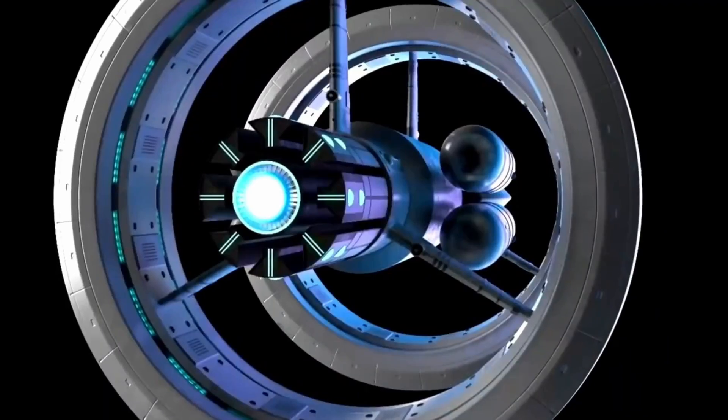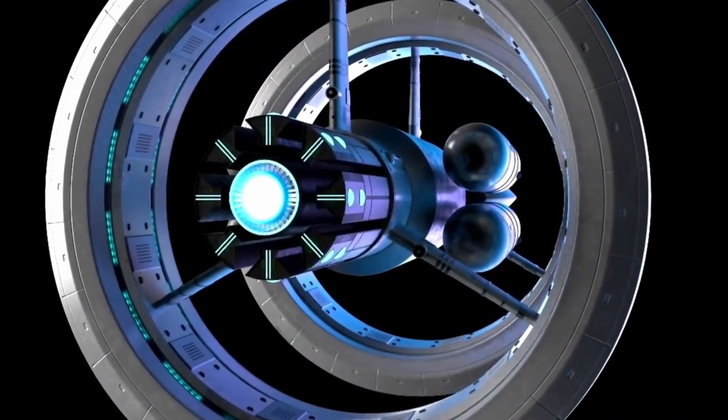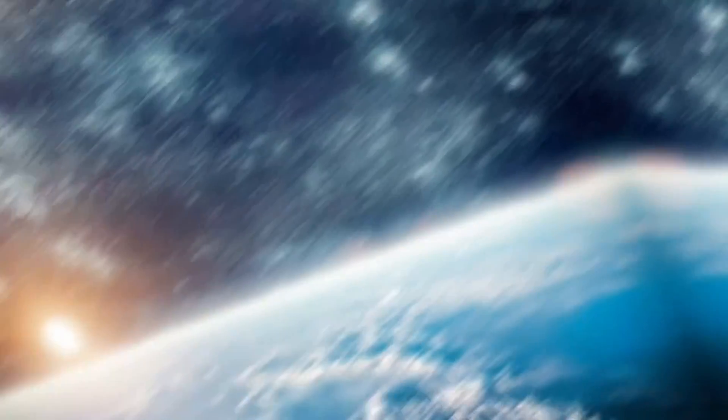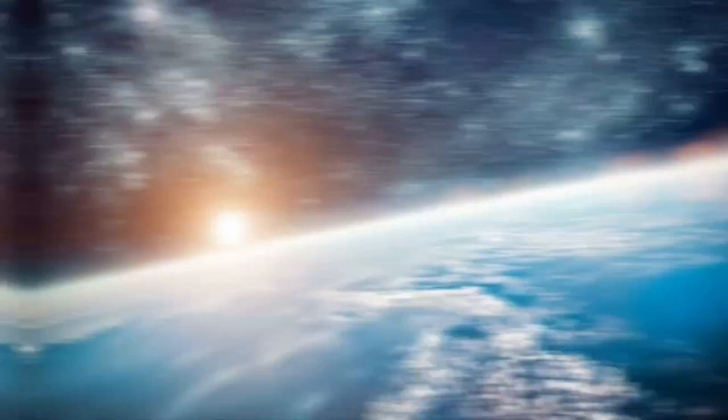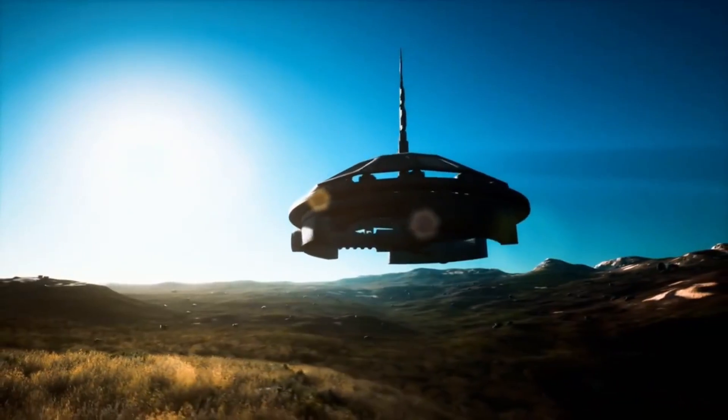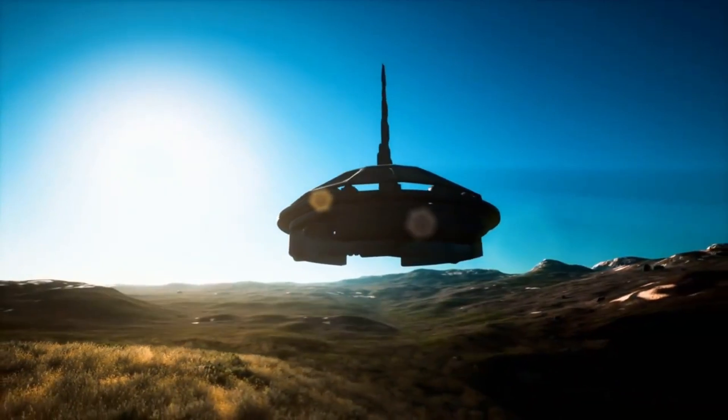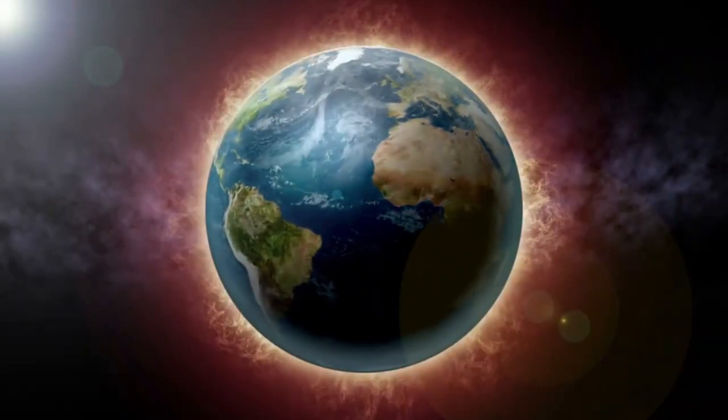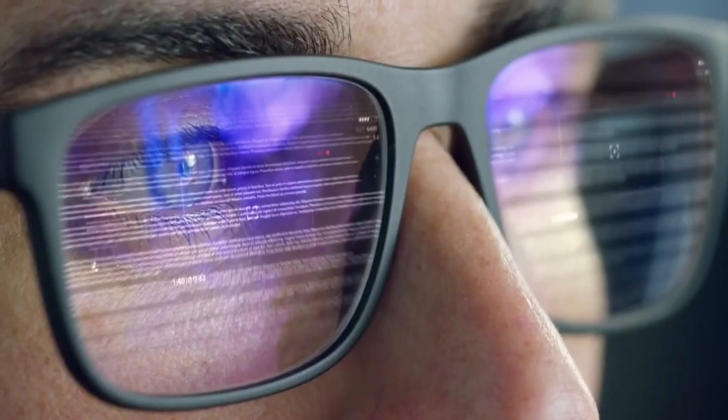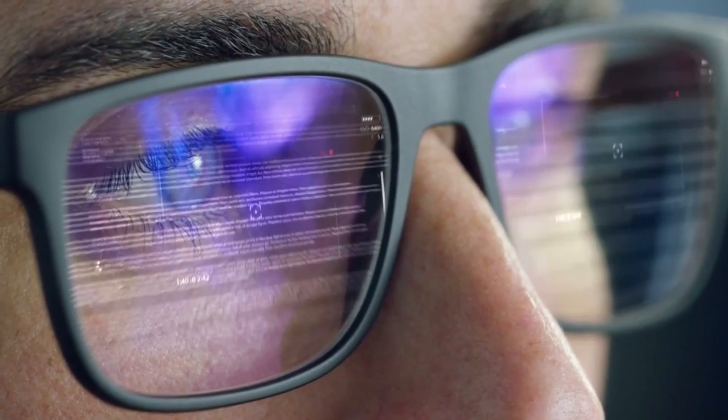This means that the spaceship could travel to a distant star and back in days, whereas it would take centuries on Earth. This would be a violation of causality laws, which state that cause and effect must occur in a specific order.